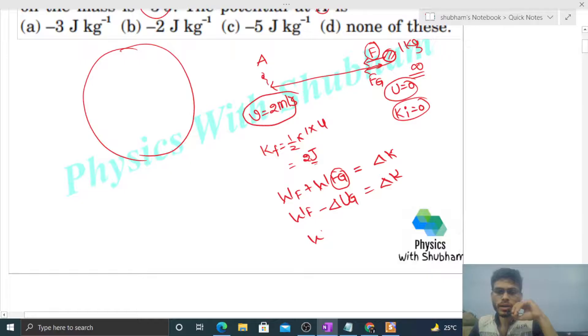Work done by capital F equals delta U_G plus delta K. You can also write it as change in mechanical energy, right? Change in potential plus change in kinetic, that is change in mechanical energy.